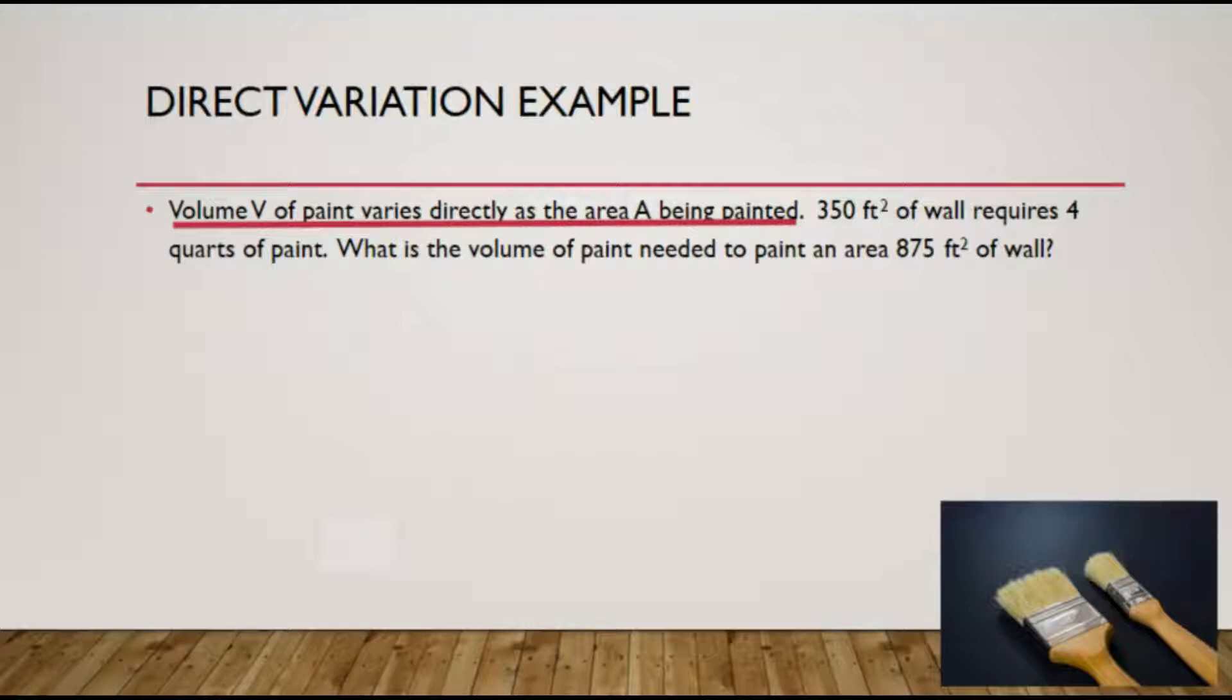Volume of the paint varies directly as the area. And from that, here we have our equation. Volume equals k, which is that silent constant of variation, or sometimes called constant of proportionality, times the area.